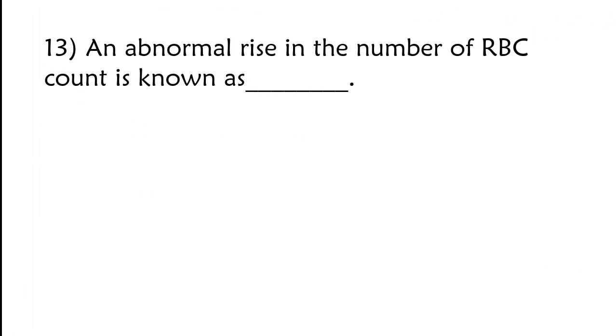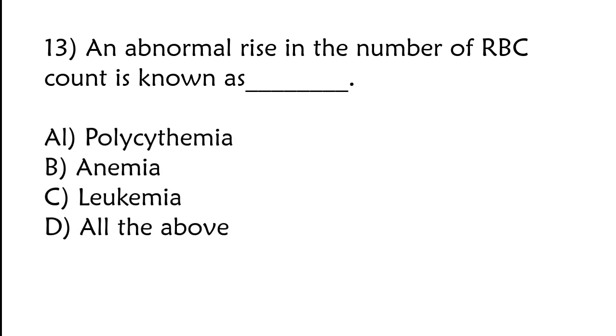An abnormal rise in the number of RBC count is known as polycythemia, anemia, leukemia, or all of the above. The correct answer is option A, polycythemia.